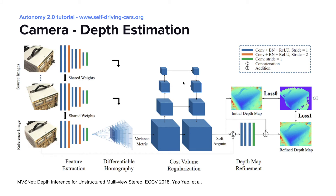Camera depth estimation is another important problem in perception. There exist many such methods for different configurations of cameras such as mono, stereo, and multi-view. The MVS-SNET removes the constraint of structured camera geometries by using a differentiable homographic warping layer to produce a 3D cost volume, which is then used to refine a dense depth map.